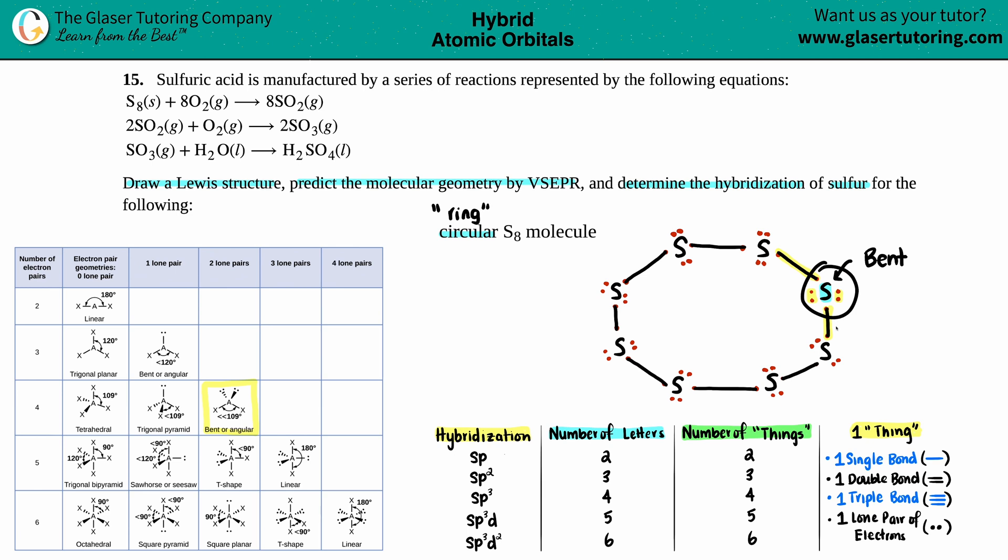In this sulfur, I had one thing. I had a single bond. I had two things. I have a single bond. So that's two things. And I have two lone pairs. That's two things. So one, two, three, four things going around the sulfur. So four things. That means four letters. So the hybridization is SP3. And that's the end for this one.